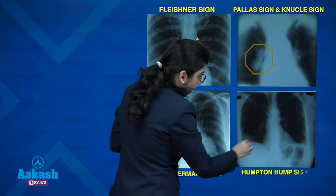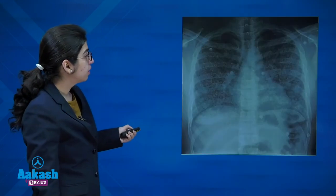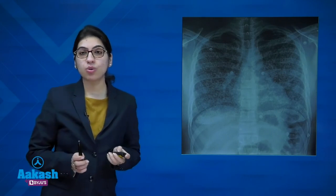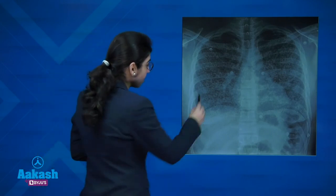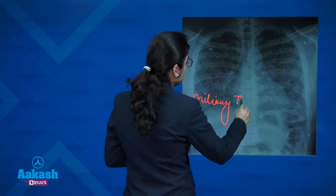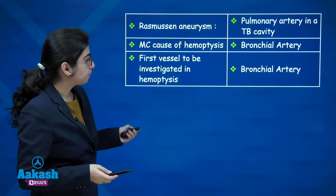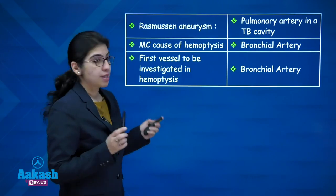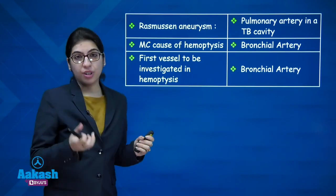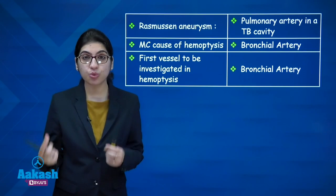On chest X-ray, multiple diffusely scattered miliary nodules of 1–3 mm size indicate miliary tuberculosis, which is caused by the haematogenous route of spread. In tuberculosis, Rasmussen's aneurysm is a pulmonary artery aneurysm within a tubercular cavity.